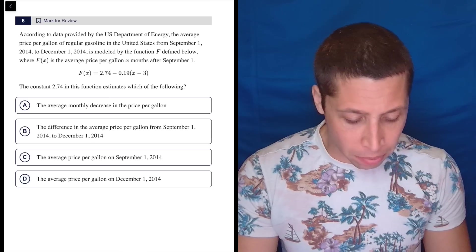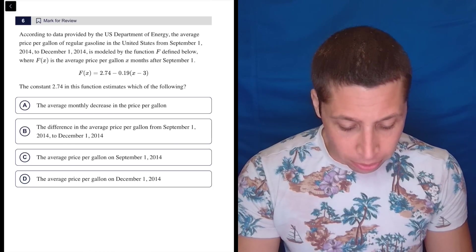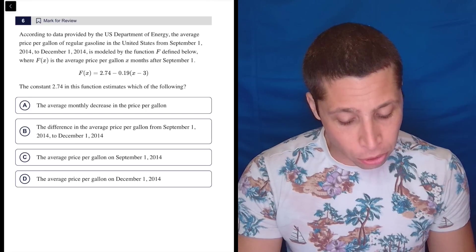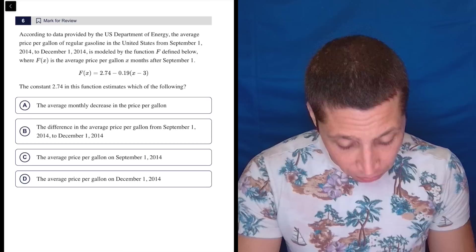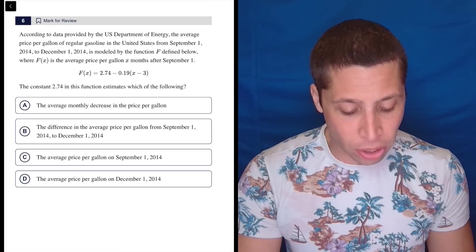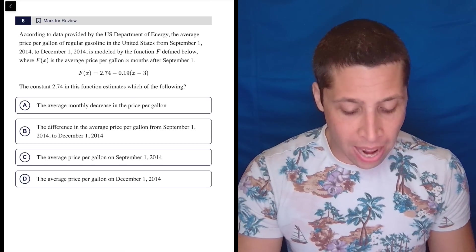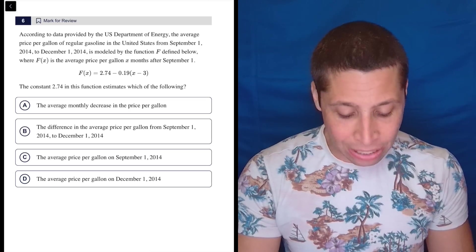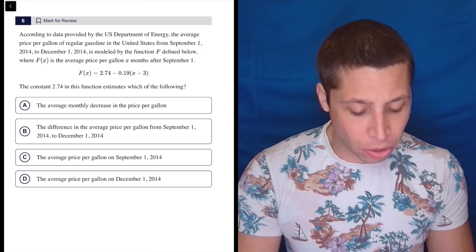According to data provided by the U.S. Department of Energy, the average price per gallon of regular gasoline in the United States from September 1, 2014 to December 1, 2014 is modeled by the function f defined below, where f(x) is the average price per gallon x months after September 1. The constant 2.74 in this function estimates which of the following.